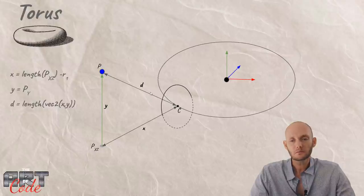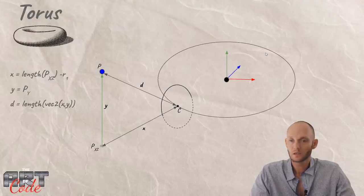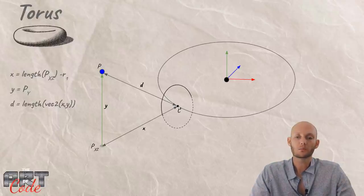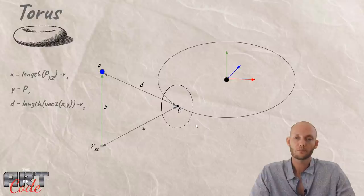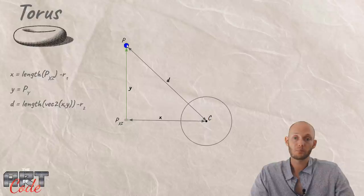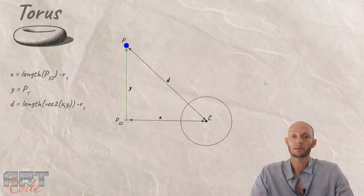Now we've overestimated the distance because that is the distance to the infinitely thin torus. So we subtract the radius of the small circle, R2. Essentially what we're doing is making this into a 2D problem. Once we have X and Y, we just get the distance from a 2D point to a 2D circle. Alright, let's implement this.